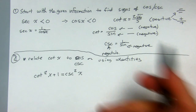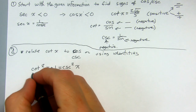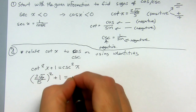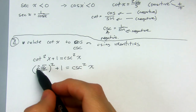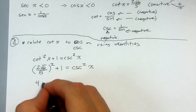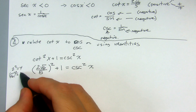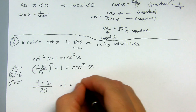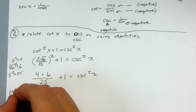We know the cotangent is equal to 2 radical 6 over 5. So I can say: (2 radical 6 over 5) squared plus 1 equals cosecant squared of x. I have to square everything: 2 squared is 4, radical 6 squared is 6, 5 squared is 25. So that's 24 over 25, plus 1, equals cosecant squared of x.